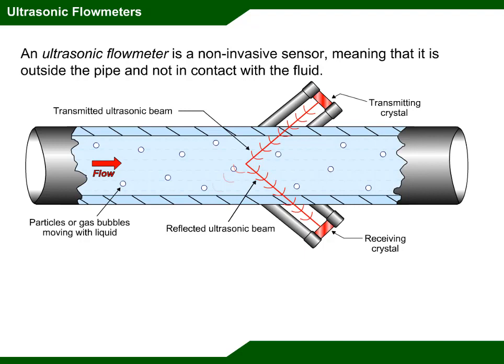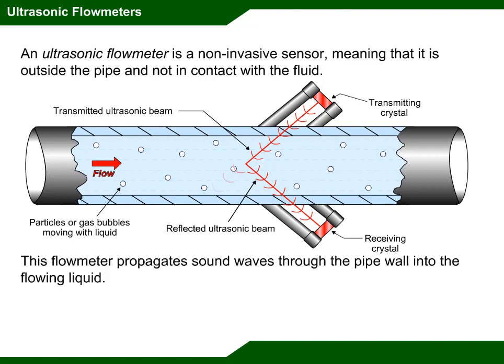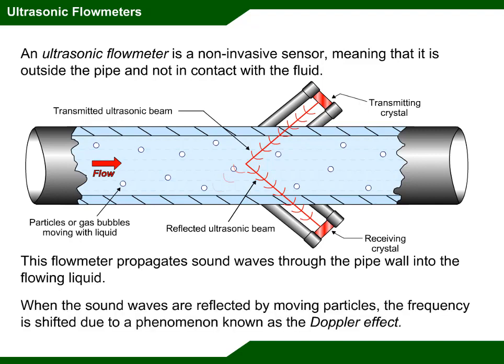An ultrasonic flow meter is a non-invasive sensor, meaning that it is outside the pipe and not in contact with the fluid. This flow meter propagates sound waves through the pipe wall into the flowing liquid. When the sound waves are reflected by moving particles, the frequency is shifted due to a phenomenon known as the Doppler effect.